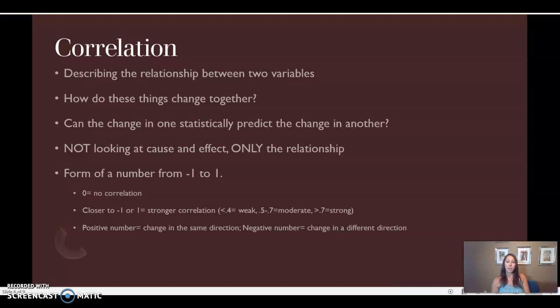A negative number, a negative correlation coefficient is the term, means that they are changing in different directions. As this one goes up, this one goes down. Or vice versa. As this one goes down, this one goes up.